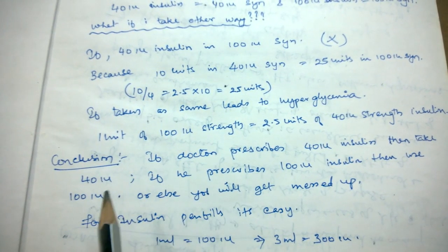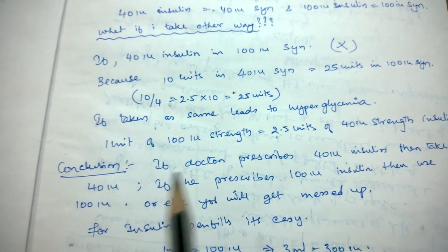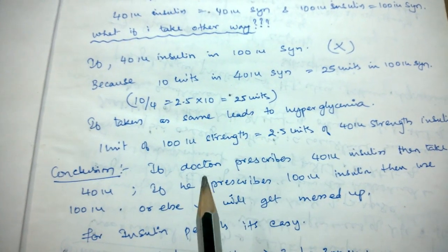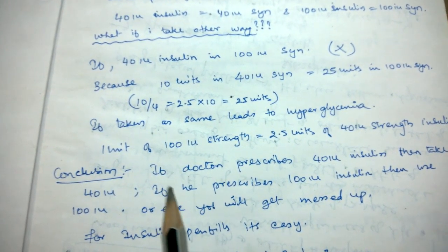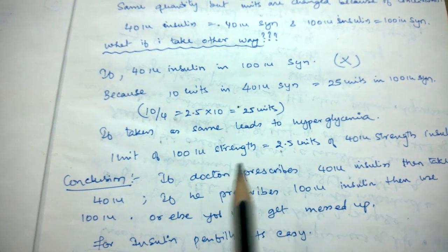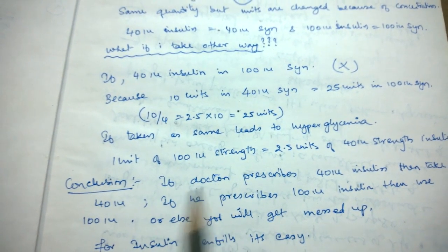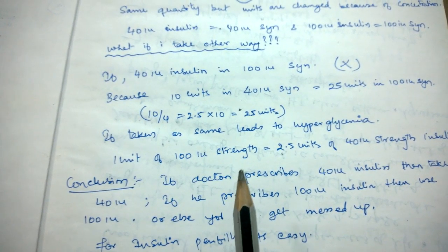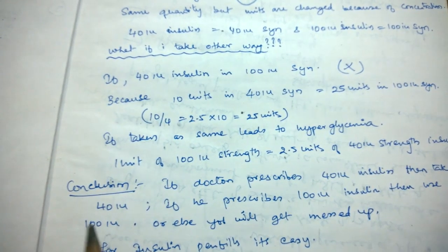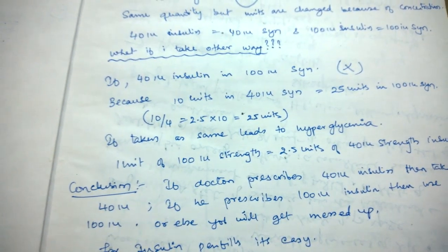If I am wrong, please mention it in the comments. If you have any doubts regarding the calculations, please mention your daily dose units and I'll explain how to take it and how many ml of insulin is needed for a one-month dose. Thank you very much.